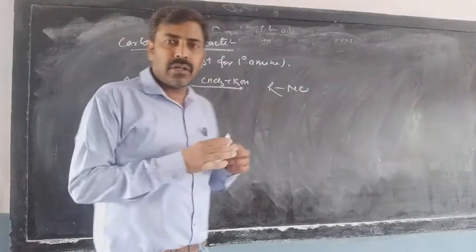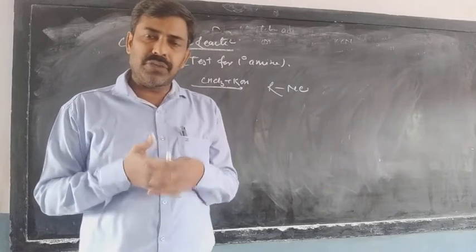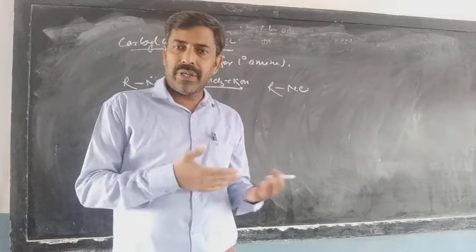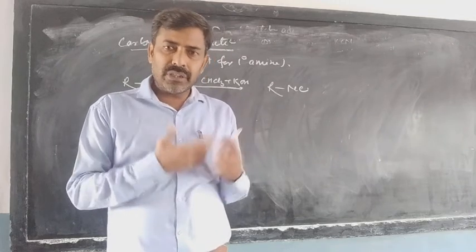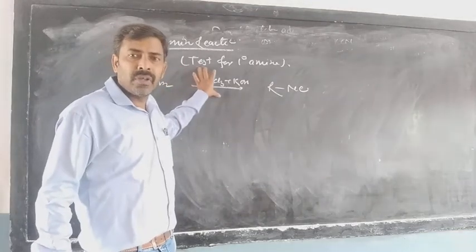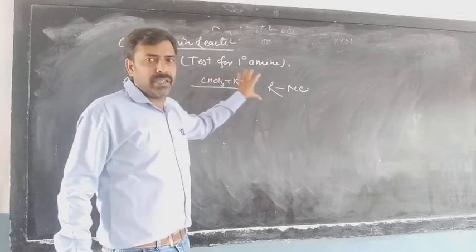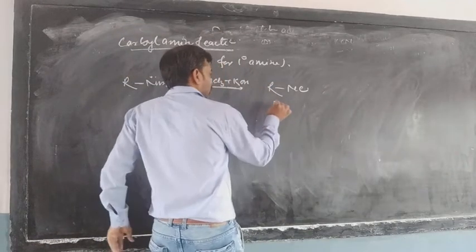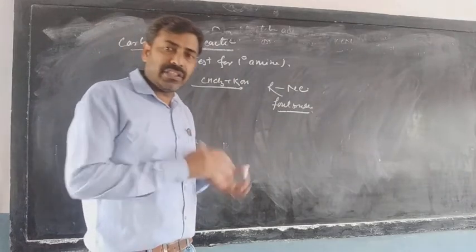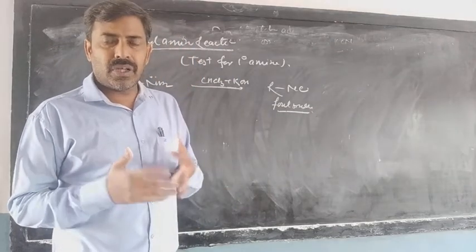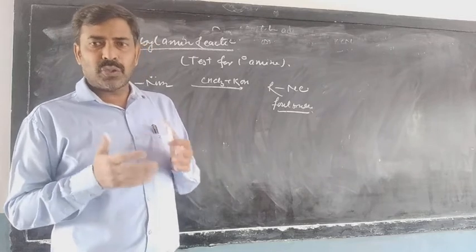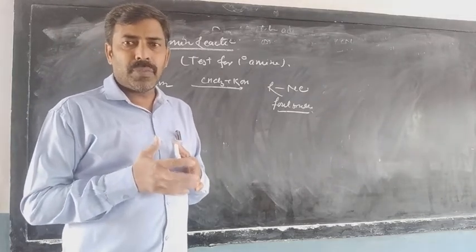Now we are going to see the carbylamine reaction. This is one of the reactions used for the identification of the primary amine - whether a compound is a primary amine or not. In the carbylamine reaction, when a primary amine is treated with chloroform and potassium hydroxide, it forms an alkyl isocyanide having a highly unpleasant smell, suggesting the presence of the primary amine. The carbylamine reaction is only given by the primary amine; secondary and tertiary amines cannot show the carbylamine reaction. So this reaction is used for the identification of primary amines.